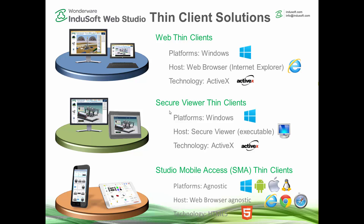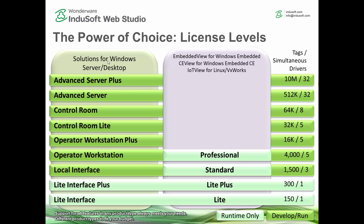Secure viewer clients are very often used for production monitoring and andon monitoring — put them on large screens up in the rafters with many out on the plant floor. The third type is Studio Mobile Access, often referred to as SMA, and this is our flagship thin client going forward. It can be viewed on Windows, Android, Apple, and Linux using HTML5 technology — open Internet Explorer 11, Chrome, or Safari on iPads, iPhones, or Android tablets and phones to view and interact with screens remotely with security in mind.